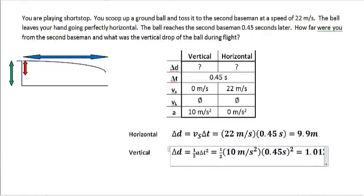1.0125 meters is the amount of distance the ball dropped. If you threw it at shoulder level, then that would be about knee level, roughly, that the guy caught it. So you might want to aim it a little higher next time.